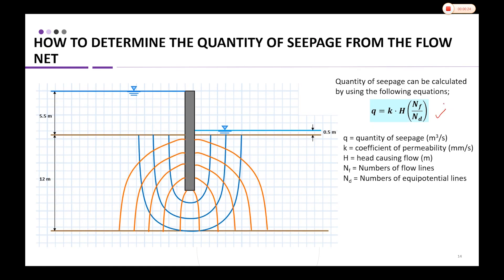The equation is q = k × h × (Nf/Nd), where q is the quantity of seepage in units of cubic meters per second, k is the coefficient of permeability, h is the head causing flow, Nf is the number of flow lines, and Nd is the number of equipotential lines.